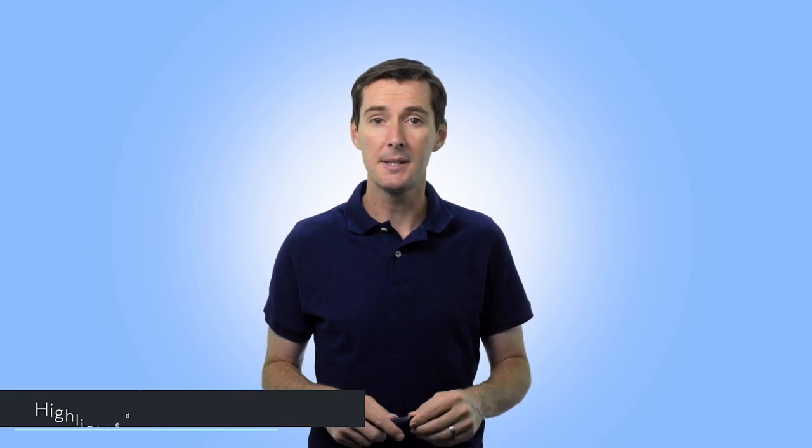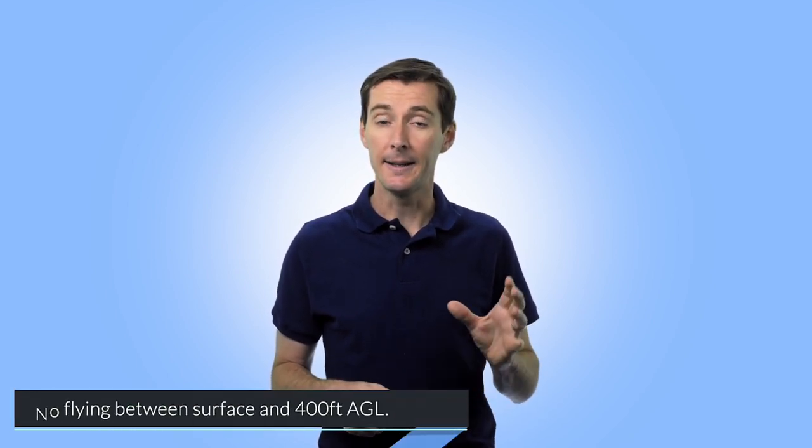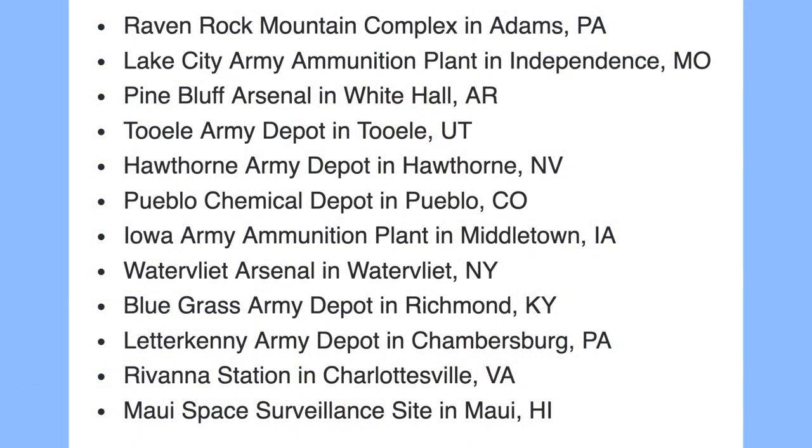Let's talk about the FAA establishing restrictions on drone operation over additional military facilities. I've talked about this before when the FAA established you can't fly over military vessels in certain areas of the country. On July 11th, 2019, they've added to the list and you can find all the information in NOTAM FDC 8-3277. Basically, there is no flying between the surface and 400 feet AGL, and they've added 12 new restricted locations.